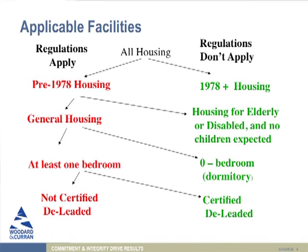Within the general housing category, we're going to focus on housing that has at least one bedroom — set aside those typical dormitory rooms on a college campus. What other kinds of housing might be at a college campus? Residence directors' apartments — absolutely. RDs, RAs, apartments where somebody could have a child living with them. The rule is not, does the child actually live there? The rule is, could a child live there? So you can have an RD who is single with no children, but if they're living in an apartment where they could have a child living with them, that is considered covered.